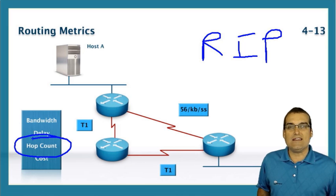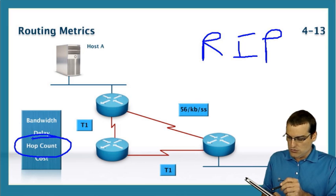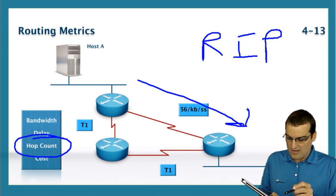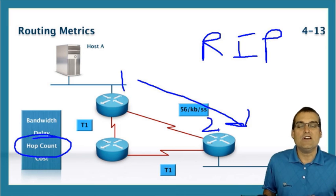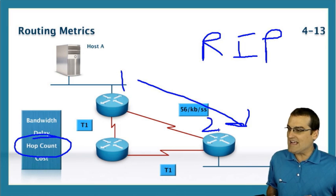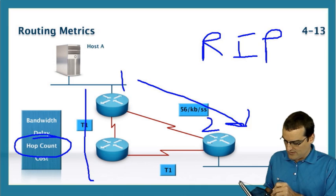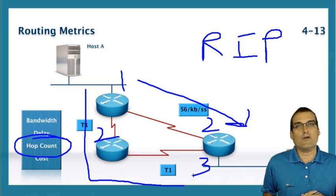that's going to mean that RIP will choose this path with 1 and 2 hops for the communications, as opposed to this path below with the 1, 2, 3 router hops.